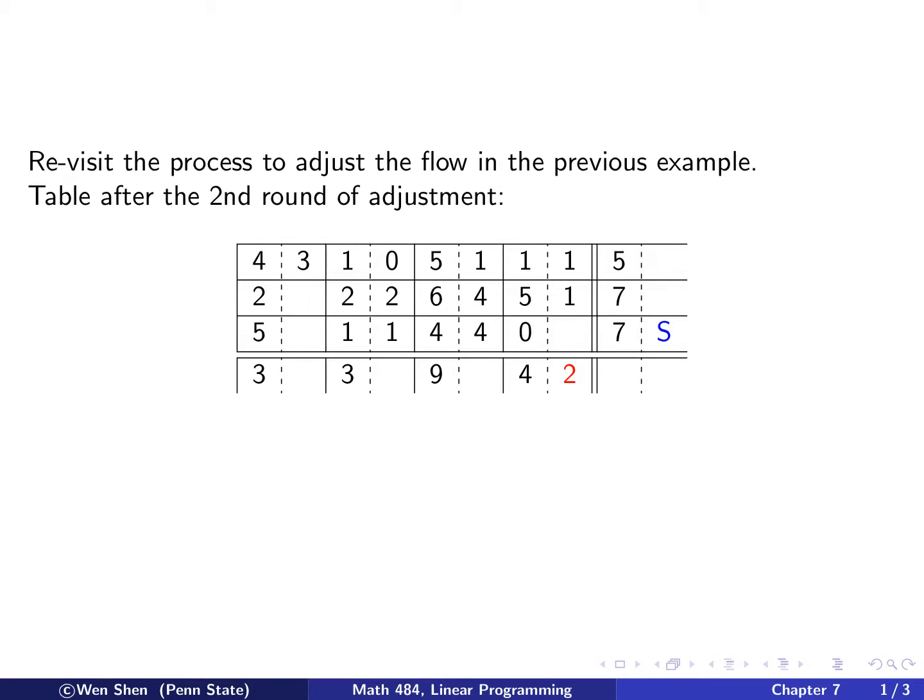From the previous example, we saw that we had to do three rounds of adjustment. The first and the second round they are rather short lengths of adjustment, but the third one is rather lengthy and it's not that easy to detect it. Let's revisit that example and that step and see that we could have a systematic way of constructing that adjustment.